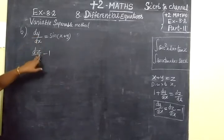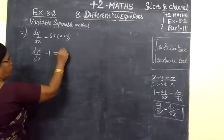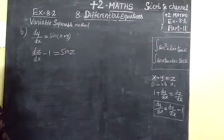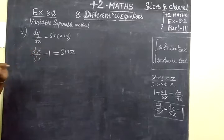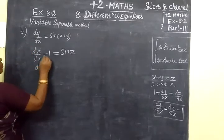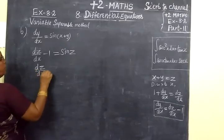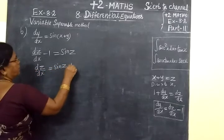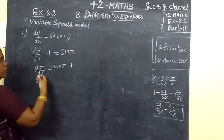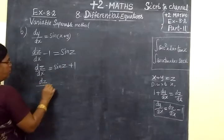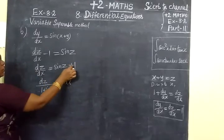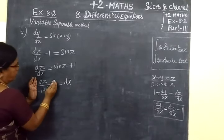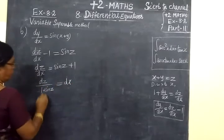Now substitute into the equation. We get dz by dx minus 1 equal to sin z, so dz by dx equal to sin z plus 1. Separating variables: dz by (1 plus sin z) is equal to dx.